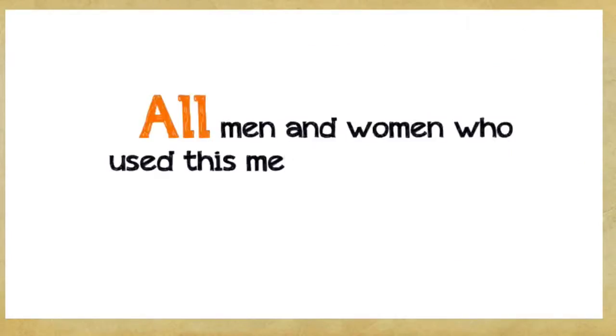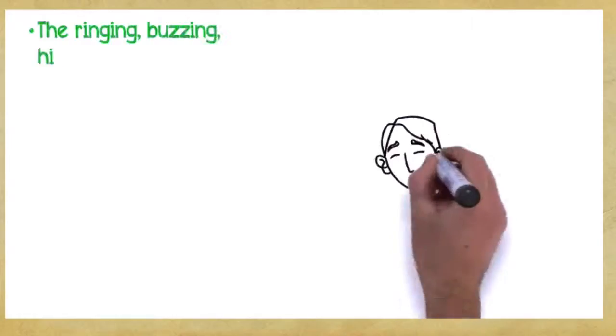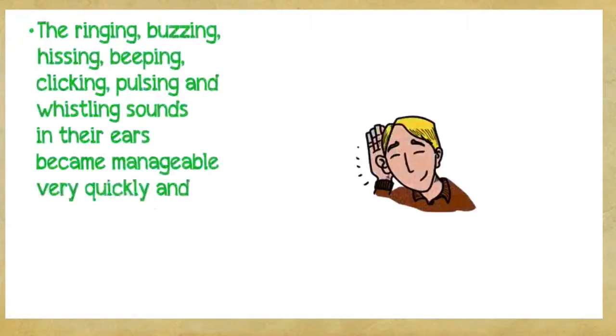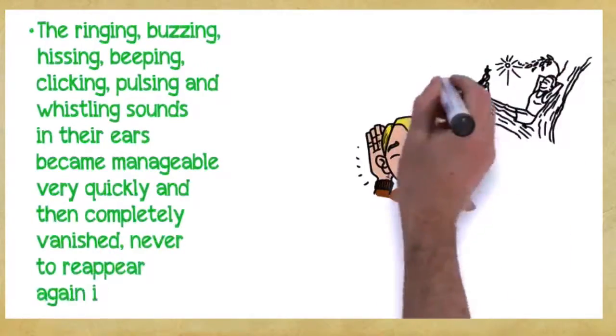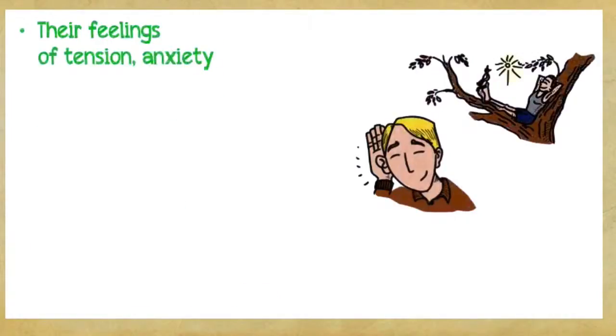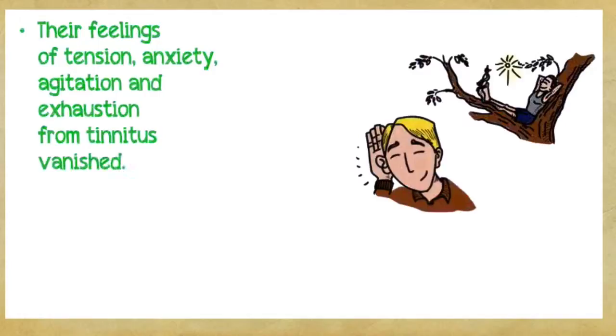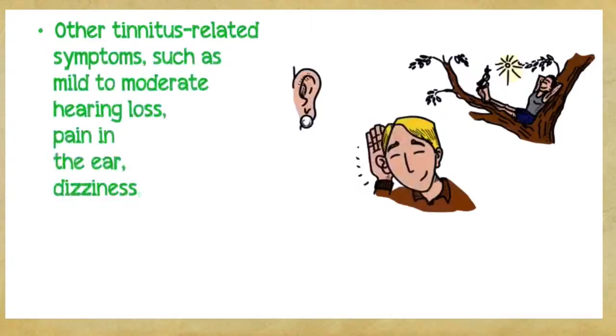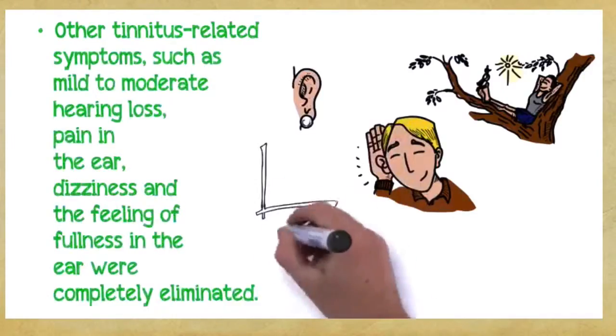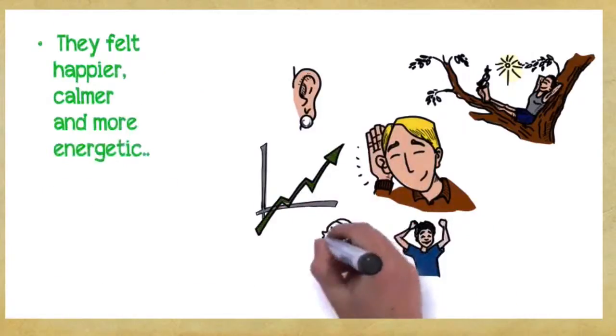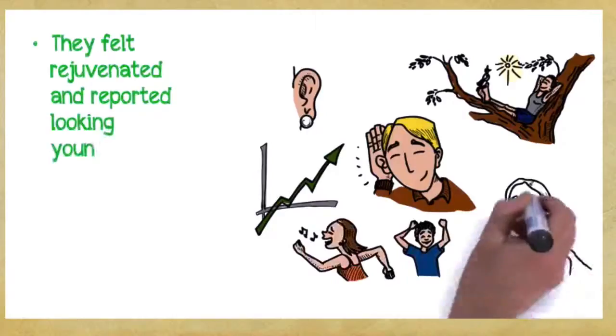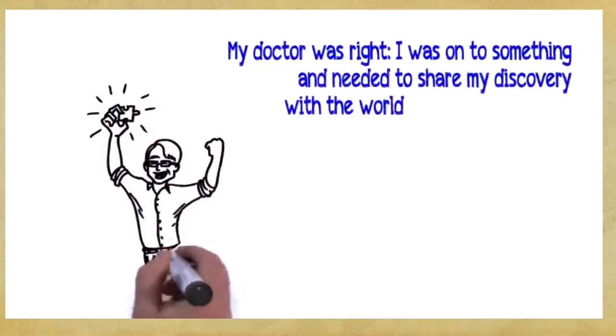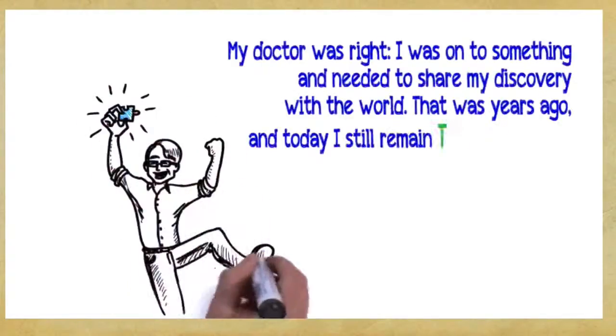What's even more exciting is that it worked for all types of tinnitus and levels of severity and for men and women of any age. All men and women who used this method experienced the following benefits: The ringing, buzzing, hissing, beeping, clicking, pulsing, and whistling sounds in their ears became manageable very quickly and then completely vanished, never to reappear again in less than 30 days. Their feelings of tension, anxiety, agitation, and exhaustion from tinnitus vanished. Other tinnitus-related symptoms such as mild to moderate hearing loss, pain in the ear, dizziness, and the feeling of fullness in the ear were completely eliminated. They felt happier, calmer, and more energetic. They felt rejuvenated and reported looking younger and more vibrant.